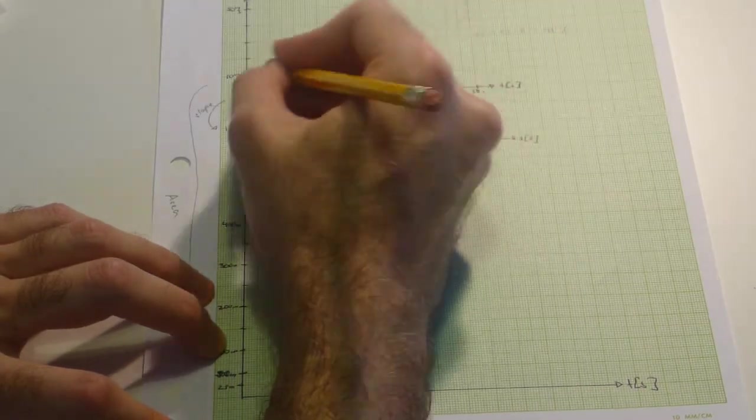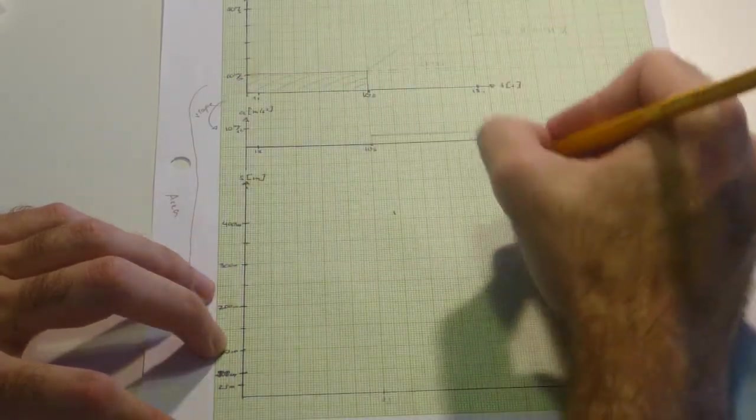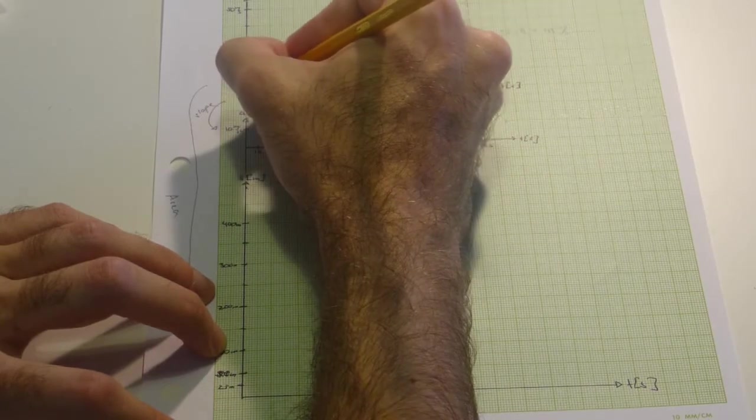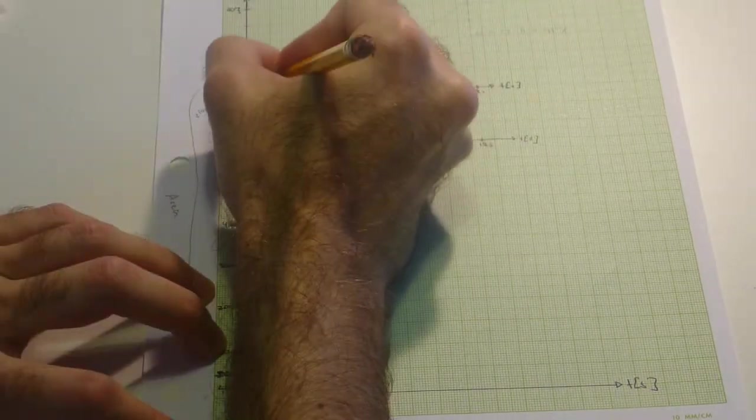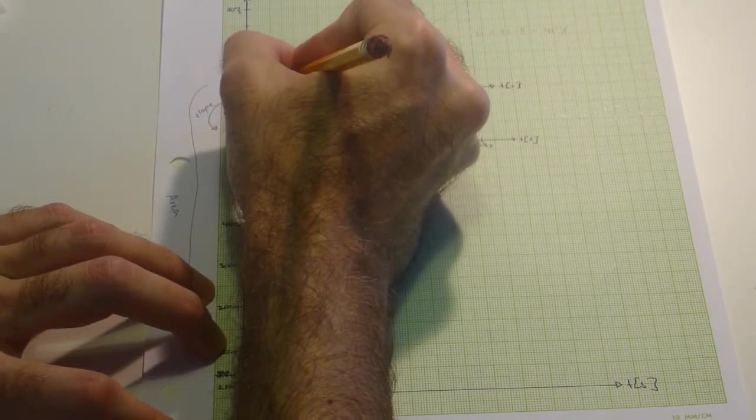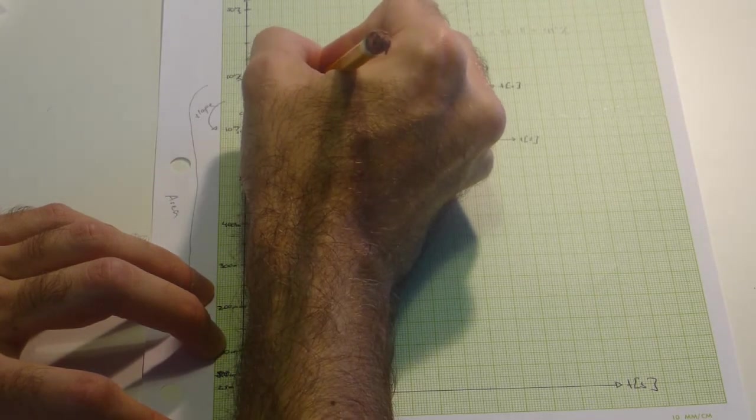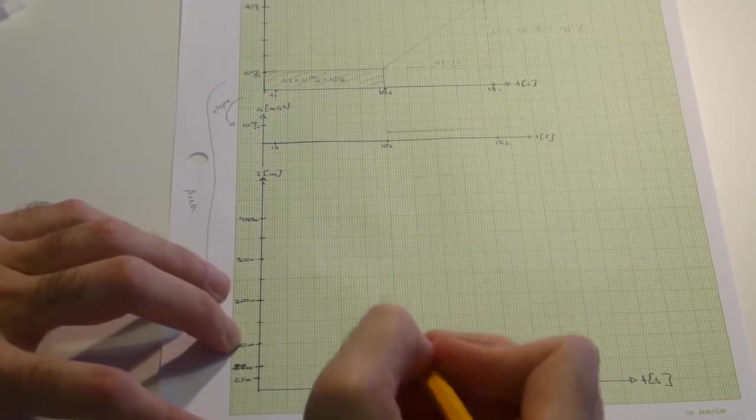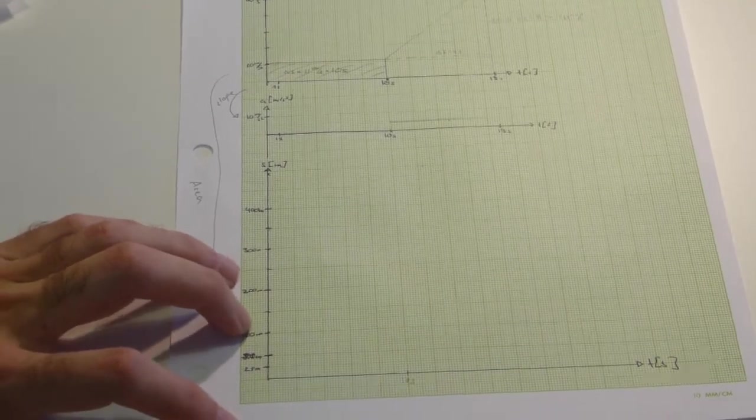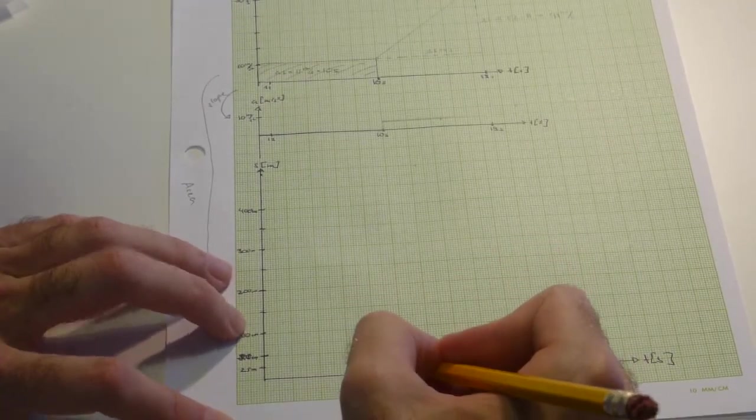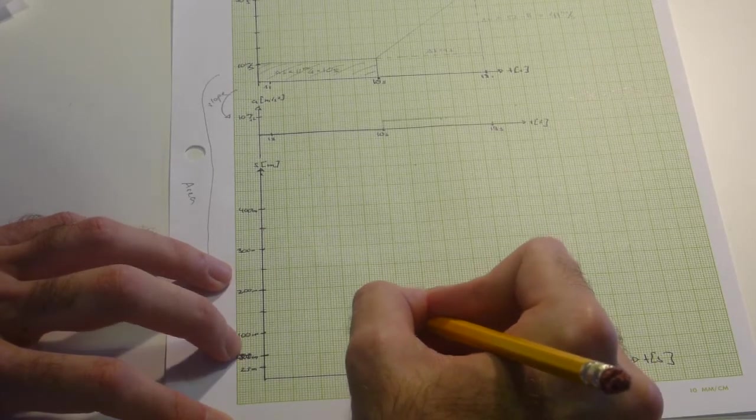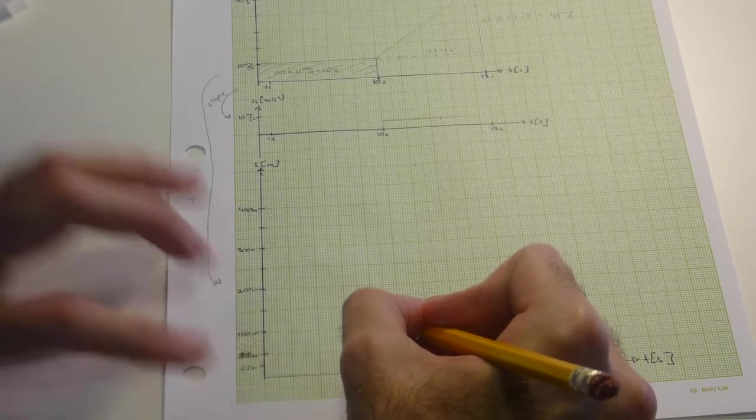If we calculate that one, that is 11 meters per second times 10 seconds. So we are at 110 meters. 50, 25, 25, 110 up here.